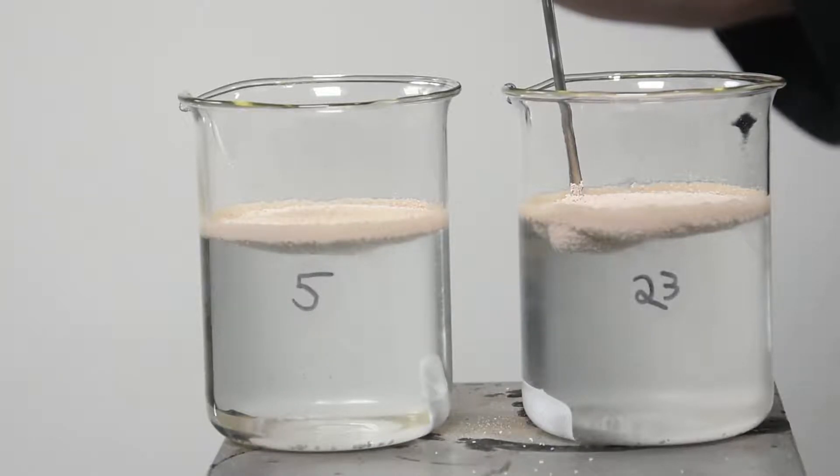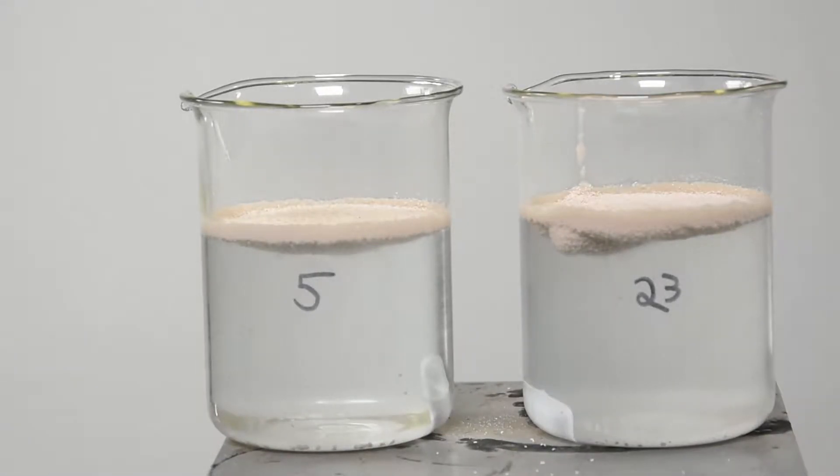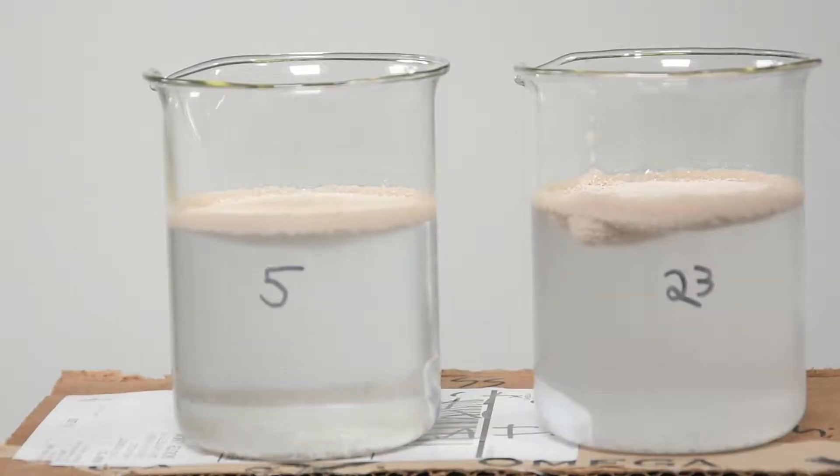Here you can see Phil getting a little nervous that the hot plate might still be a bit too hot to be doing this right now. So he places a piece of cardboard in between the hot plate and the samples.